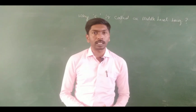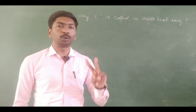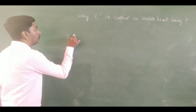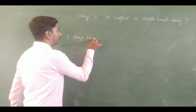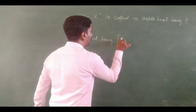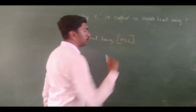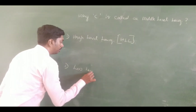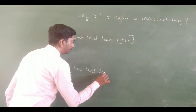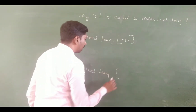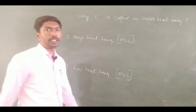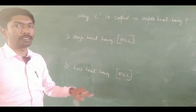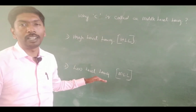Before explaining why C is called a middle level language, first, there are two types of languages. One is called a high level language and another one is called a low level language, which is also called a machine level language.